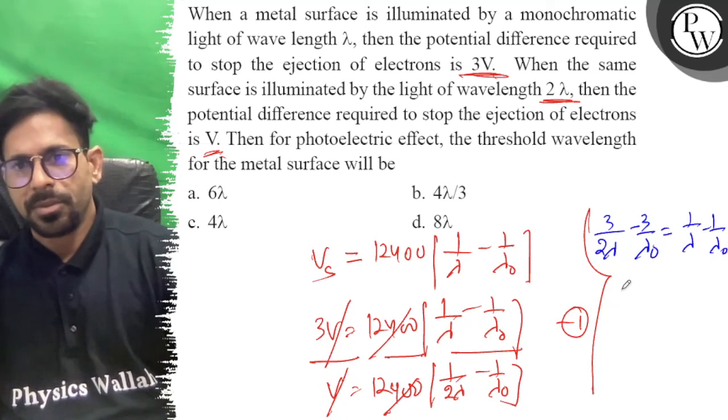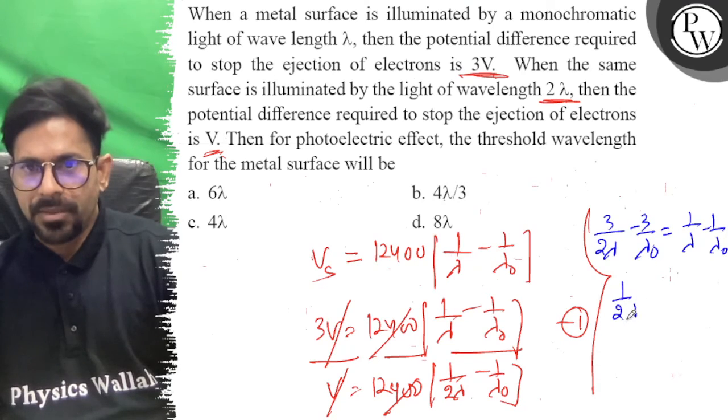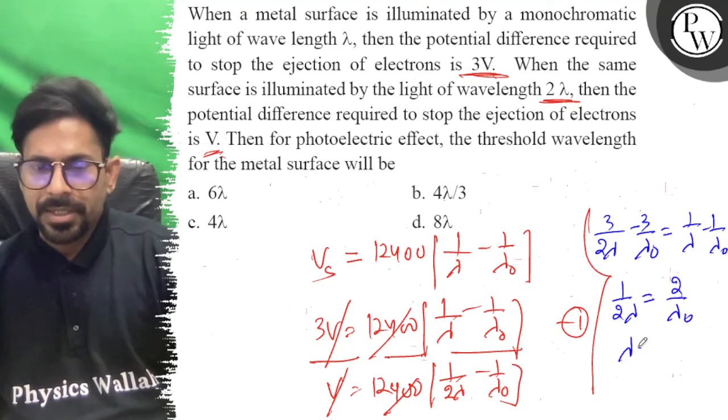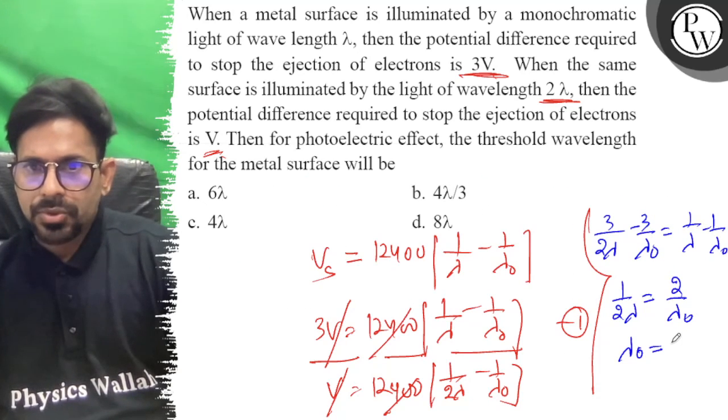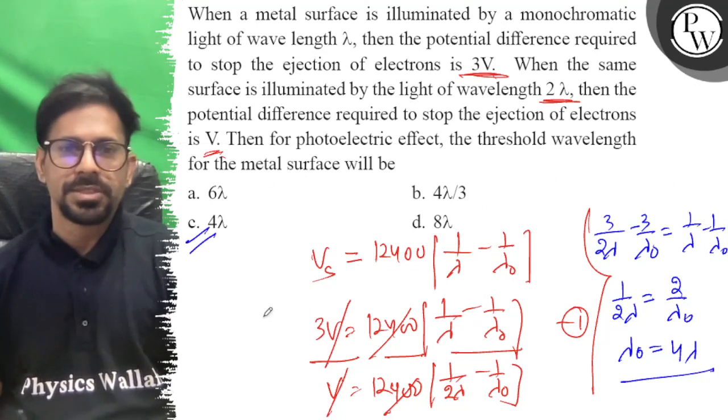Let's combine the terms. If we add 1 by 2 lambda, then we add 2 by lambda 0. So lambda 0 will be 4 lambda. So the right answer to the question is C.